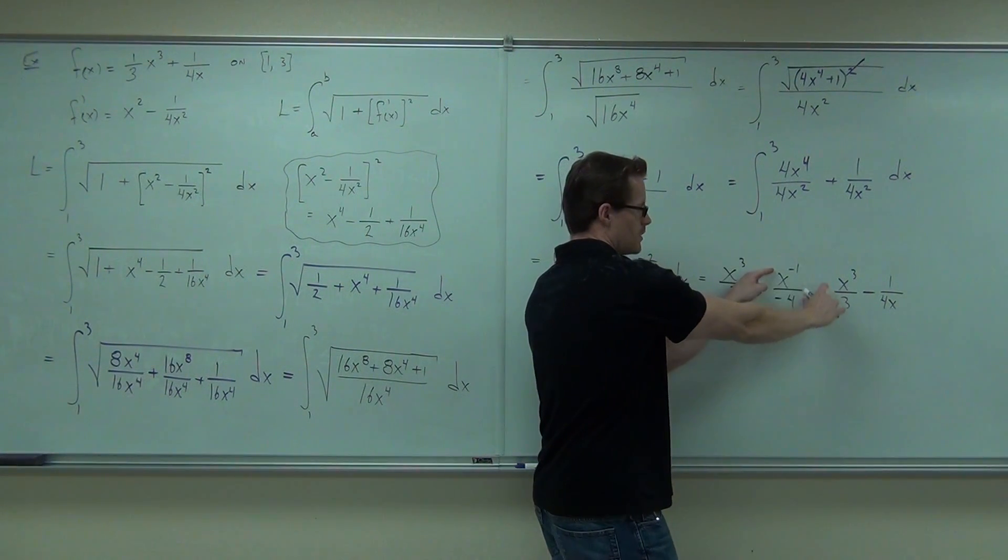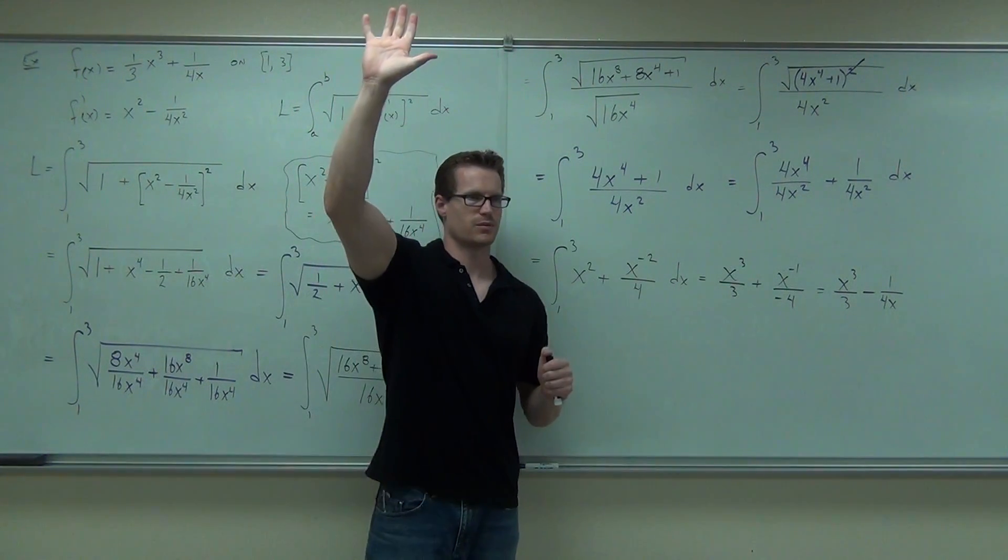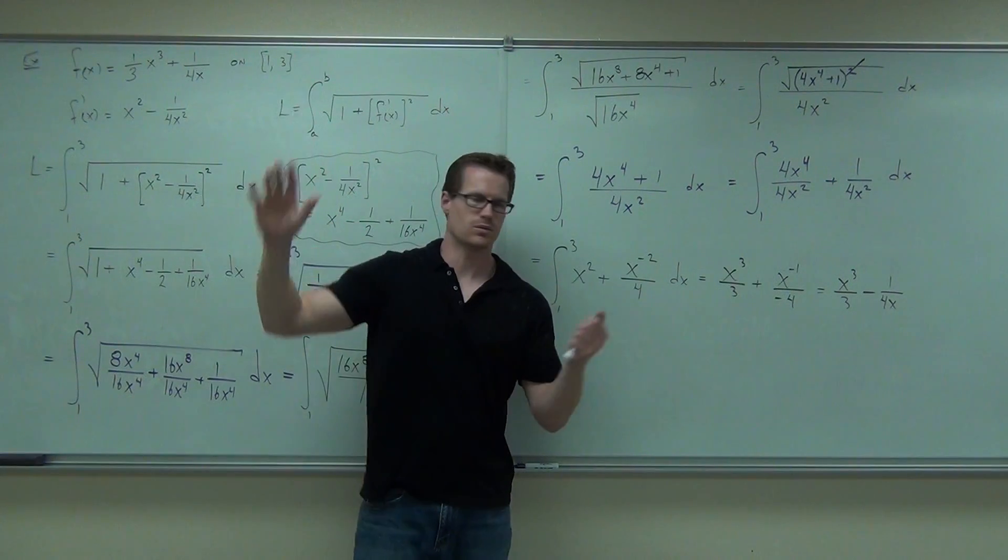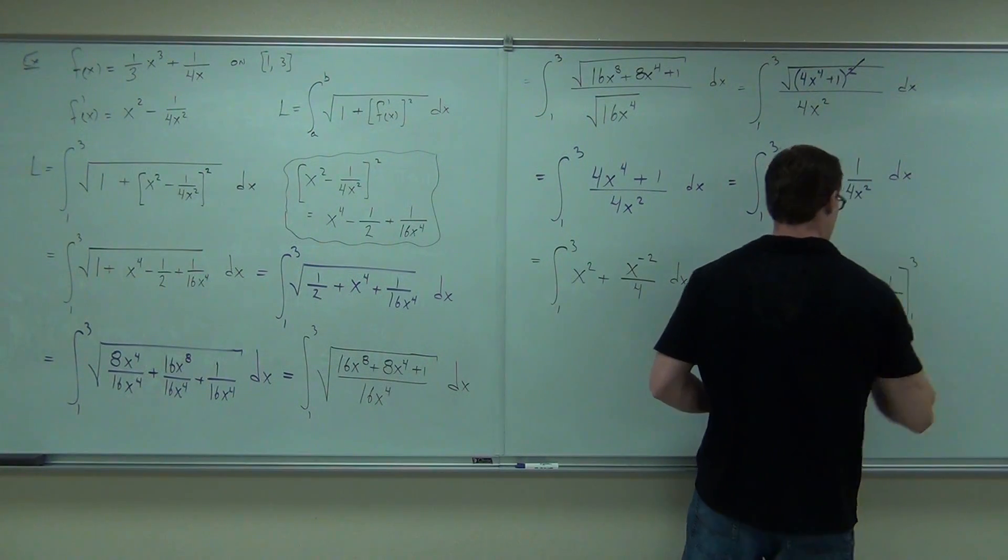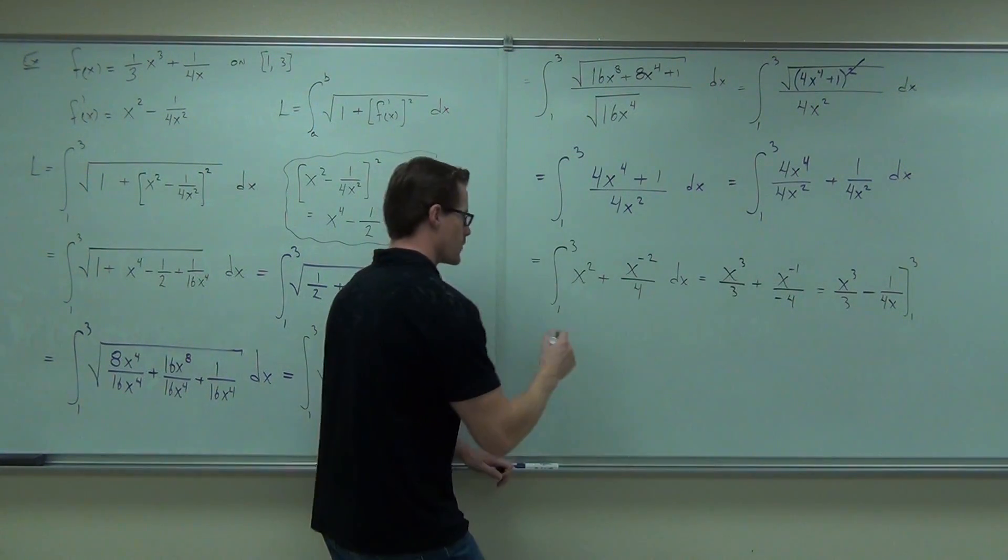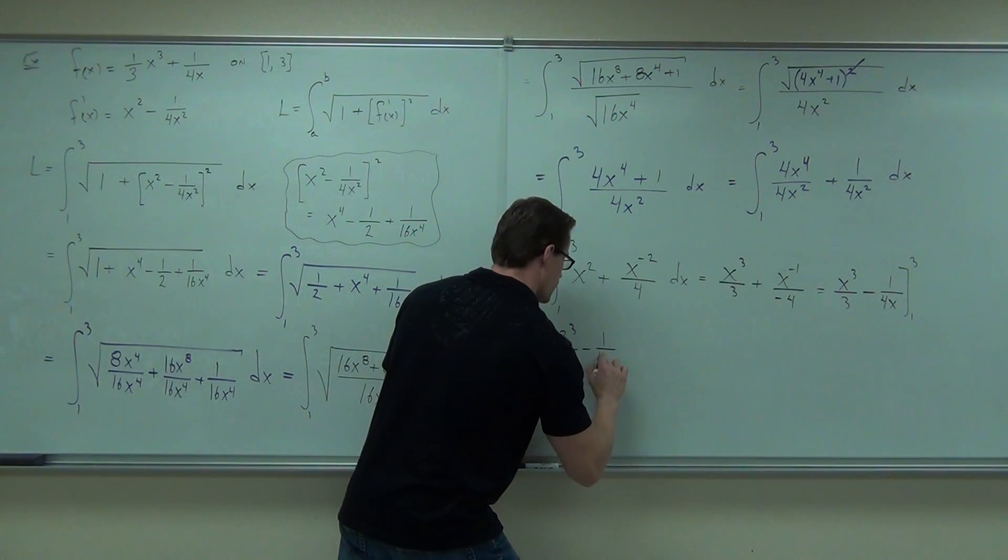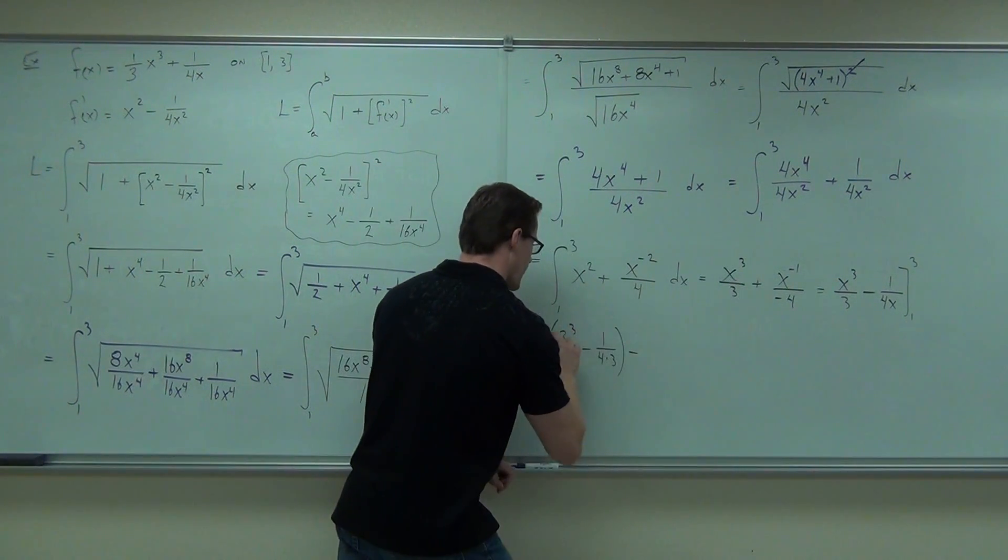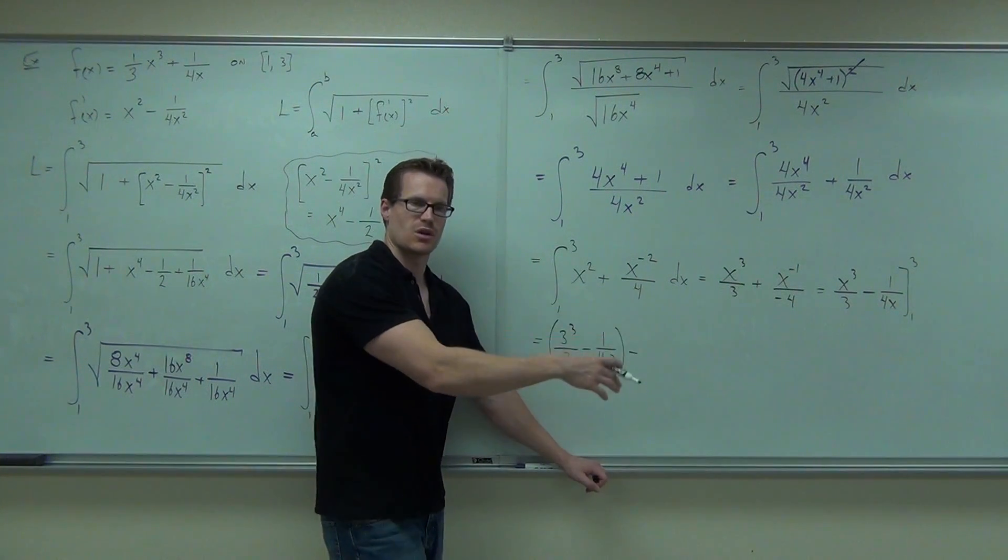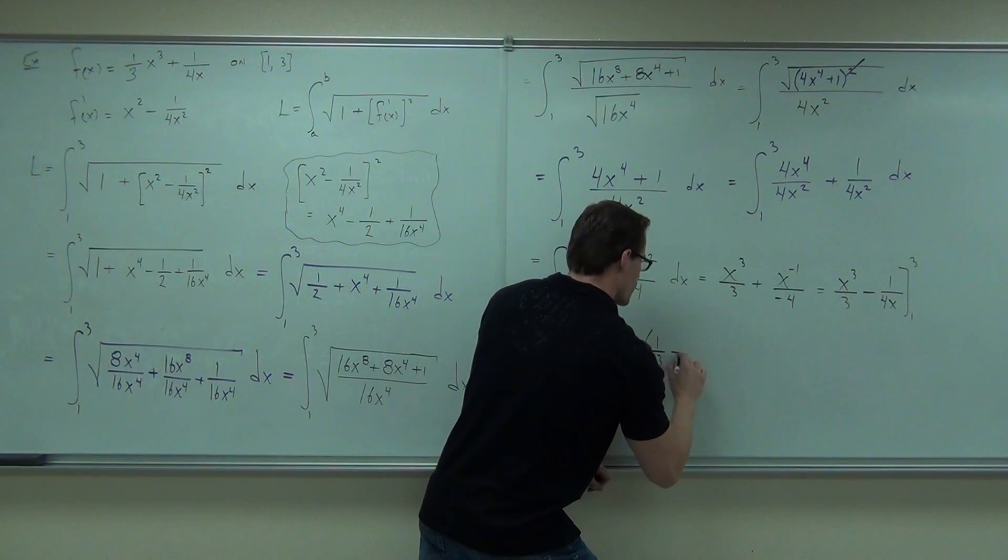This is going to be x to the 3rd over 3. We're going to have a minus 1 over 4x. Minus 1 over 4x. Yes, no? I wish I could be all that way down that far. Cool. Hey, it's just a valuation for this. We've got to go from 1 to 3. We'll plug in the 3 first. So that's going to be 3 cubed over 3. Minus 1 over 4 times 3. Minus. Remember, we have a 1 right now. You can't just put a 0 at the end. We have a 1. So you have 1 3rd minus 1 4th.